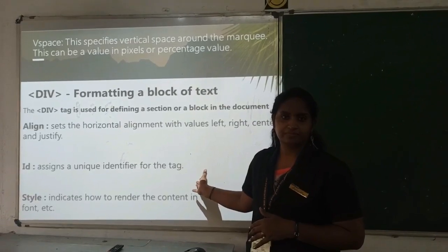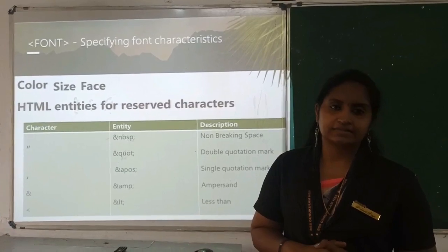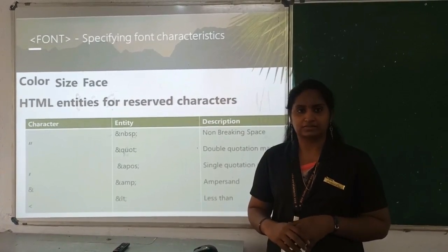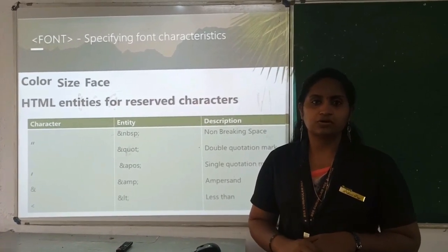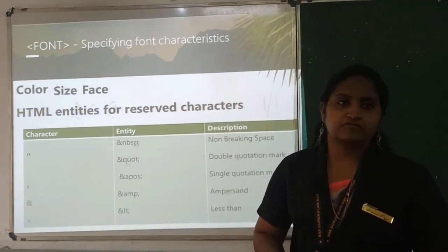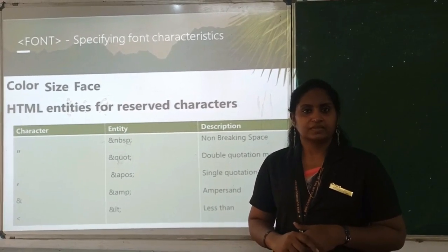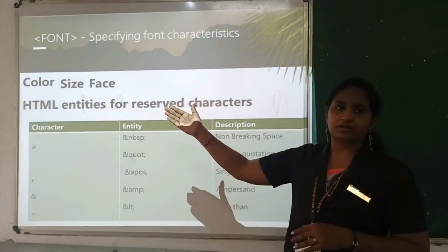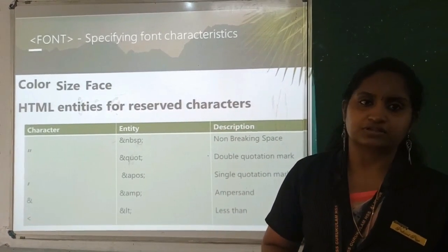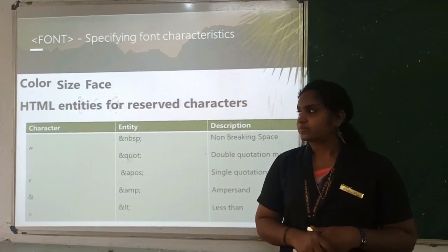The font tag is used to apply font types, sizes, and colors in a webpage. Its main attributes are color, size, and face (font style). For example: font color equal to blue, size equal to 30, and you can apply different font styles so the content is displayed in that particular style.